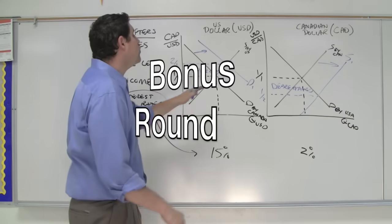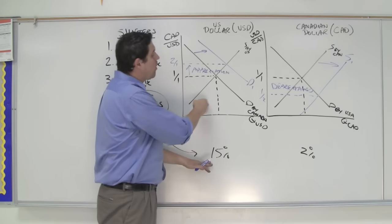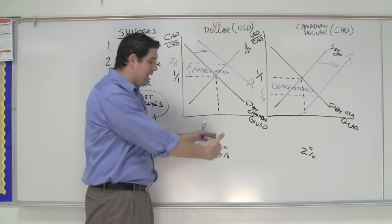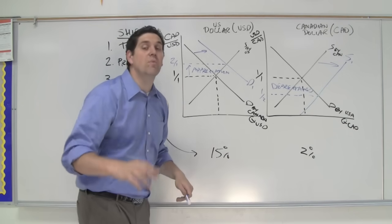Quick bonus round. That's one way to analyze it. Remember what I told you was that Canadians are going to want more American dollars because they want to get that higher interest rate. They want to get that return of 15% compared to 2% they get in their own country.